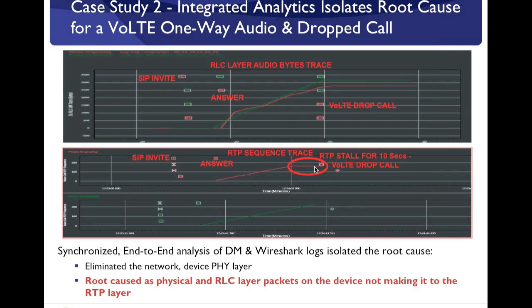This highlights the importance of synchronized end-to-end analysis, where you need correlation of different layers from different sources. In this example, the two different log sources are the diagnostic monitor logs and Wireshark logs. All these logs need to be correlated in one place so that you can understand where the issue lies and take appropriate action. The root cause was a device issue where physical and RLC layer packets on the device were not making it to the RTP layer — they were getting dropped somewhere between the RLC layer and the RTP layer, leading to the call drop.